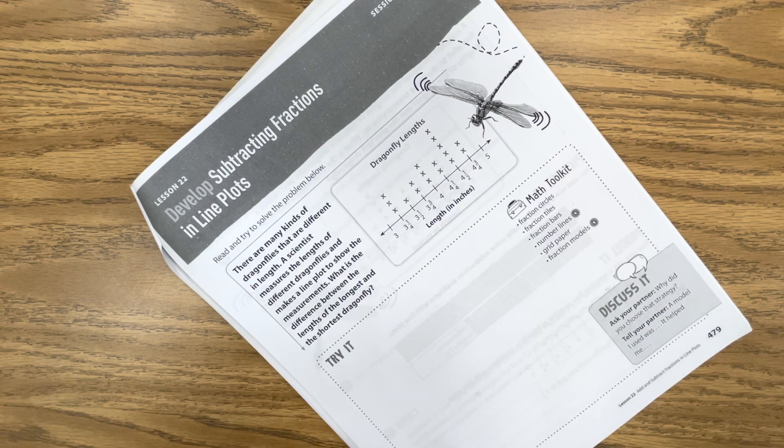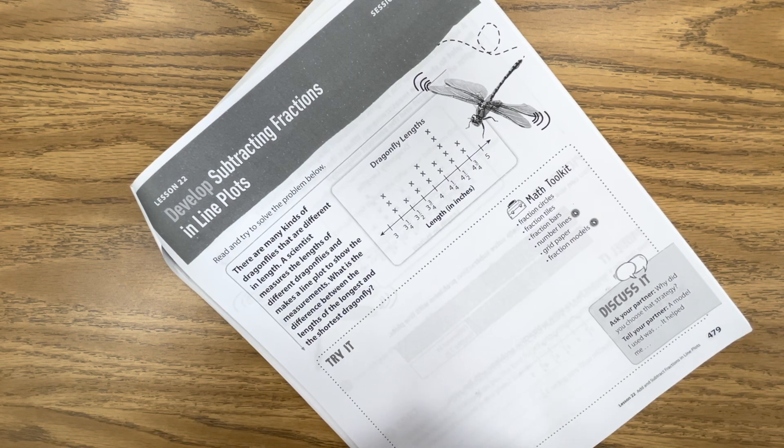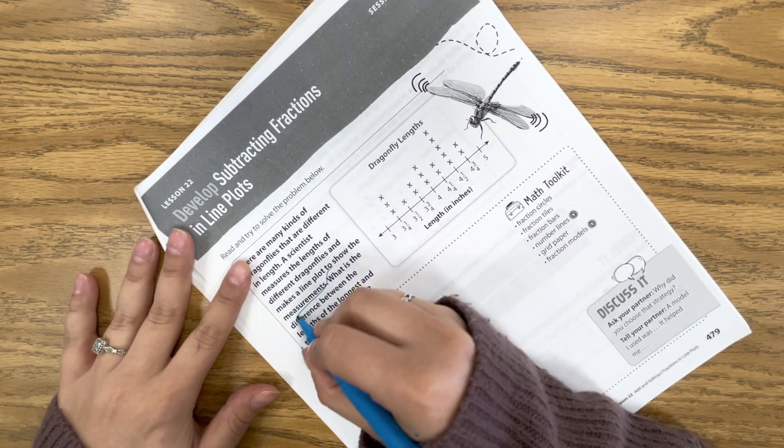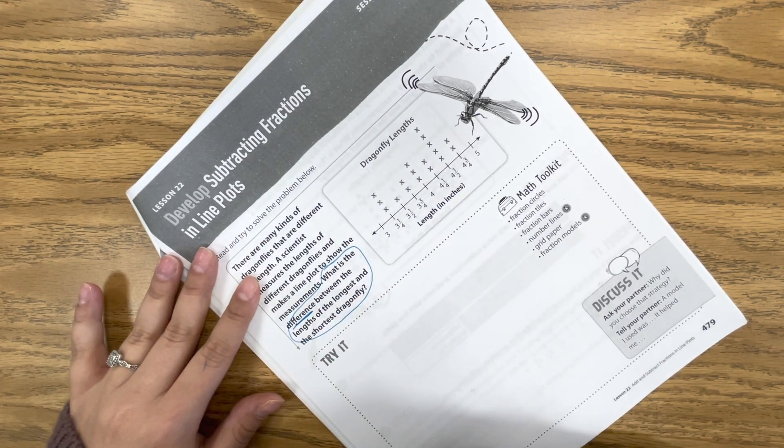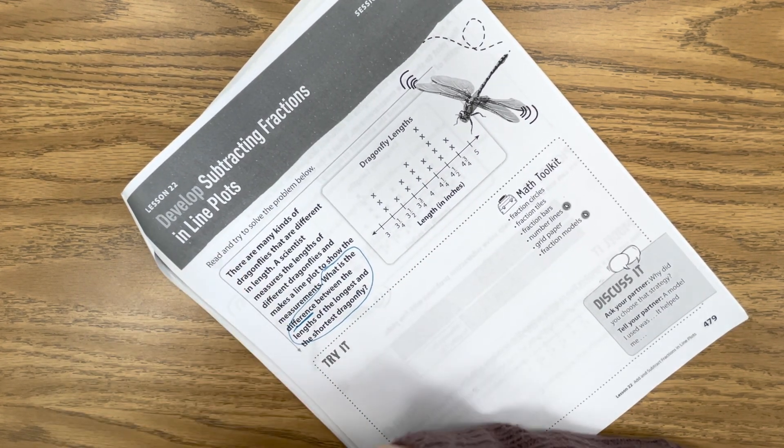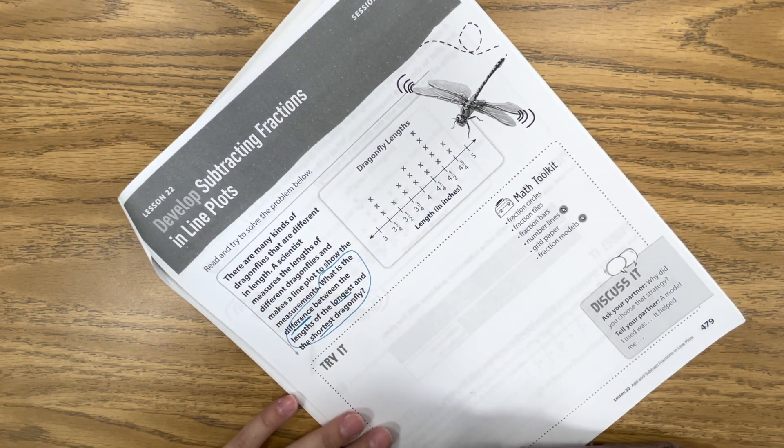So we're going to jump right in with page 479. There are many kinds of dragonflies that are different in length. A scientist measures the lengths of different dragonflies and makes a line plot to show the measurements. What is the difference between the length of the longest and the shortest of butterflies?